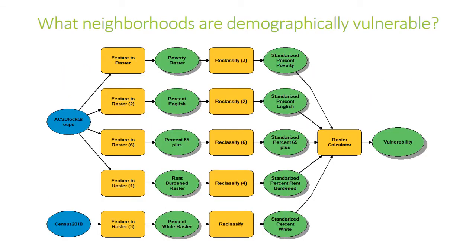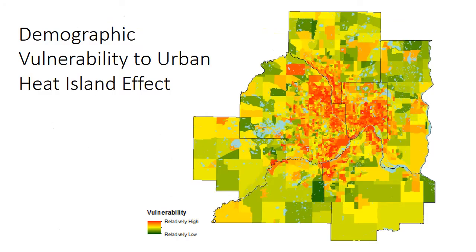Based on the previous literature on what demographic characteristics make a neighborhood vulnerable, I measured vulnerability by the following variables: percent poverty, percent English speaking, percent over 65 years old, percent rent burdened, and percent white. My demographic data came from the 2010 Census and from the American Community Survey 5-year summary file from 2011 to 2015. This graph illustrates the vulnerability level of different block groups — the more red, the more relatively high vulnerability from a demographic standpoint. Notice all the red in the center. The blue represents water features, and the black lines show the seven counties in the metro area.